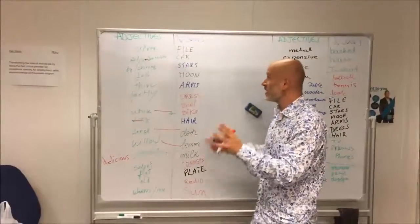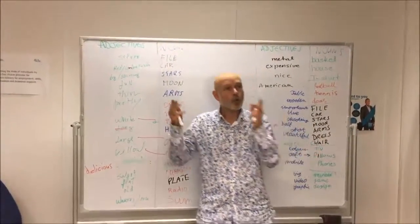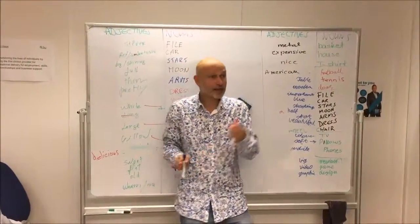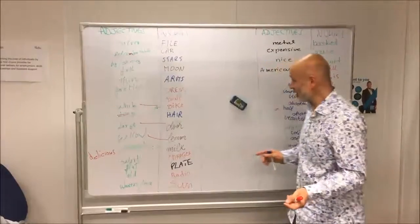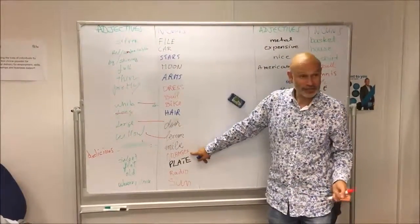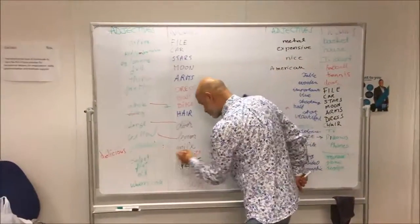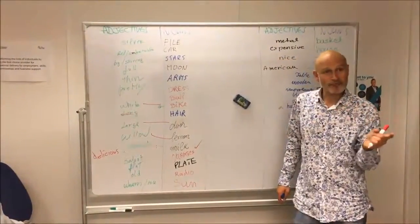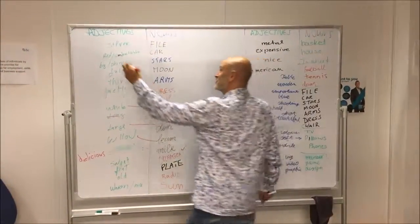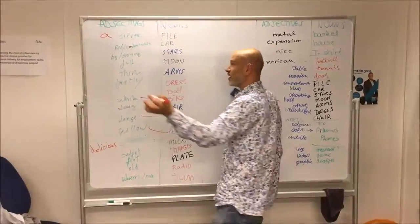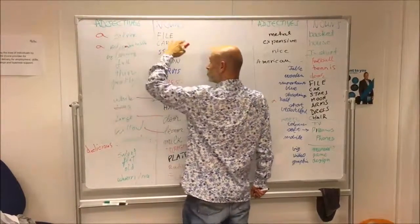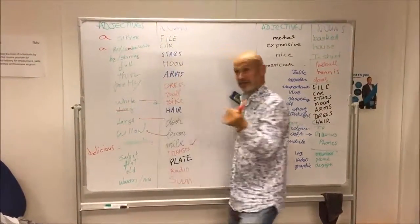Now the only one thing I will say about this work: remember the difference between one thing and lots of things. So here we have sweet oranges, that's fine. But remember, if you have one thing you have to say 'a' - a silver file, a red or a comfortable car. Big shining stars is good because it's plural.